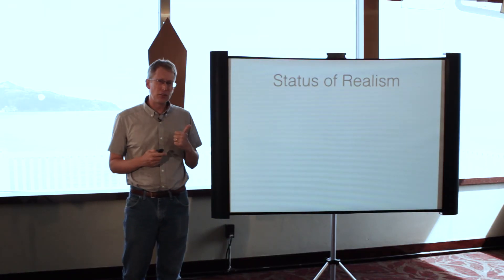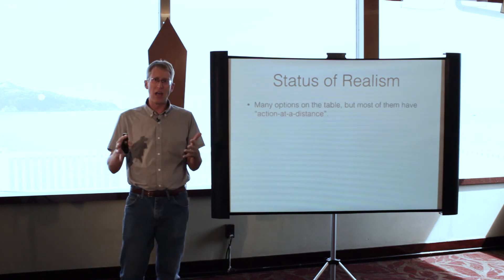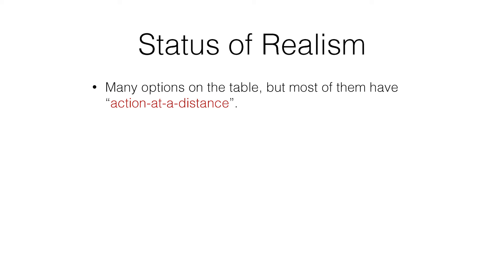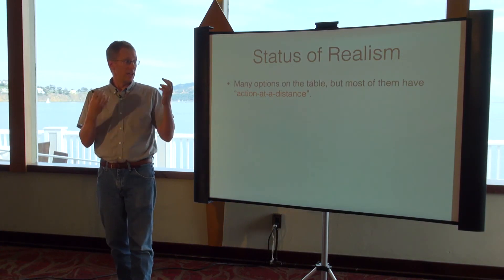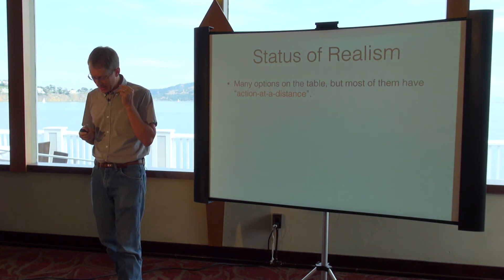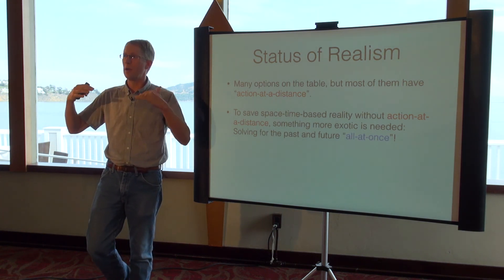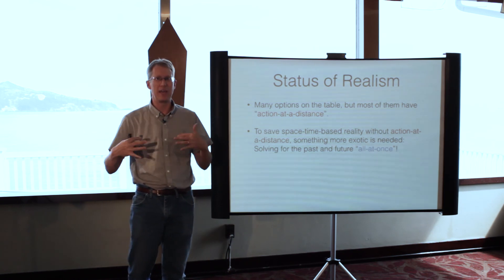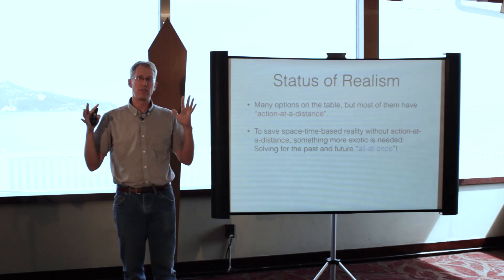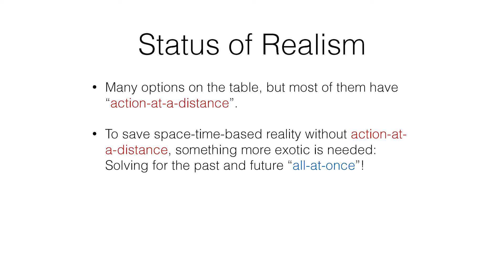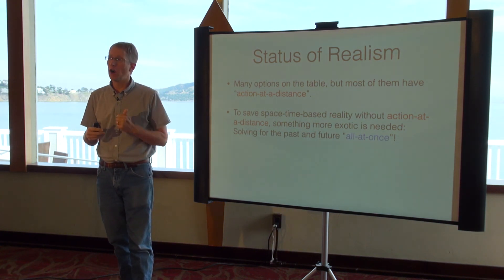The status of realism—we'll talk about a bit during the debate—but basically there are a lot of options on the table, but most of them suffer from this seemingly deep flaw that it has action at a distance in it. We do not have action at a distance in classical physics, and so here again something non-classical seems to be coming in. However, there is this one escape route. You could actually have a space-time-based reality without action at a distance, but you need something else exotic. The one exotic thing I think that could help you save this is if instead of solving the equations one time step at a time, instead of treating the universe like a big computer taking an initial state and solving for the next state, you take a step back and view all of space and time as one structure and solve for what's in that structure all at once.